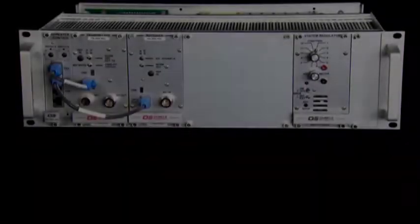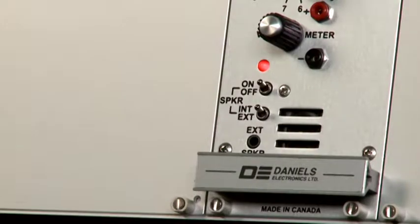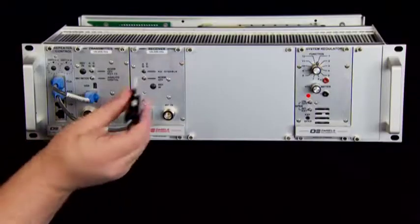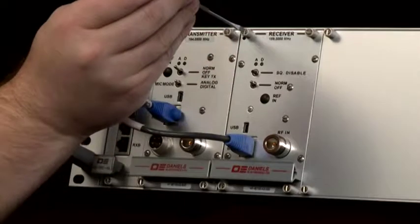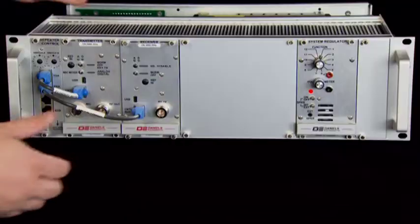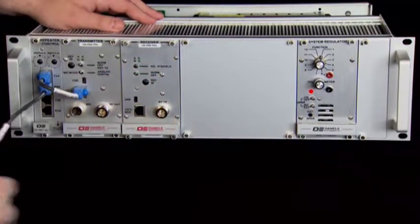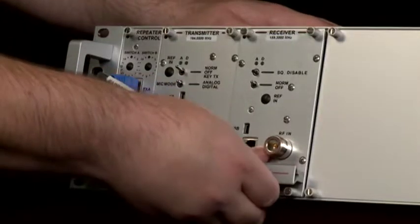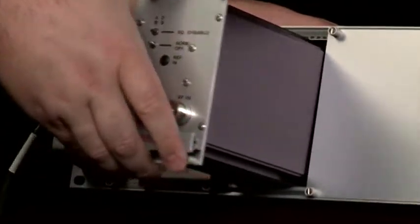To begin, ensure that the sub rack has power by turning the speaker switch on the system regulator to the on position and checking that the LED turns on. Turn the four quick release fasteners on the receiver 90 degrees counterclockwise to release them. Remove any RJ45 cables or RF cables connected to the receiver. Pull the receiver out of the sub rack.